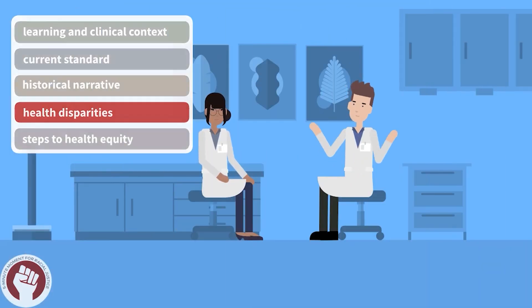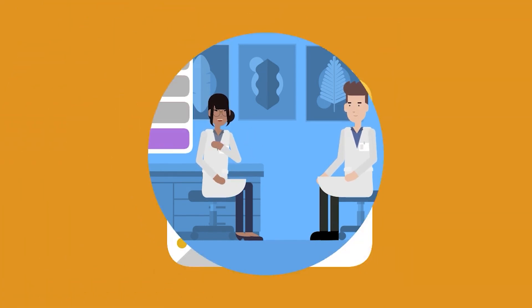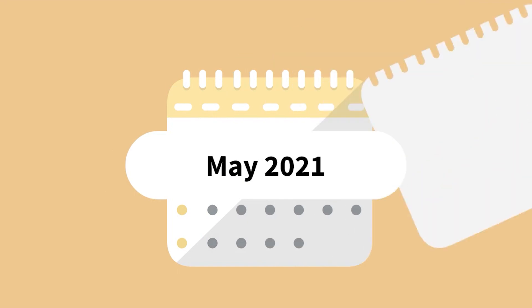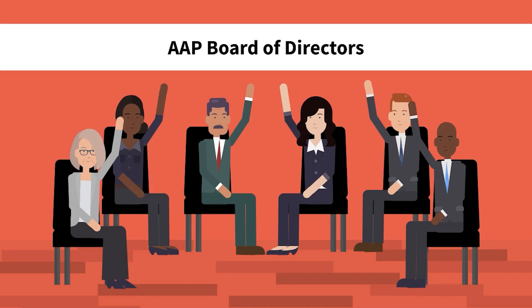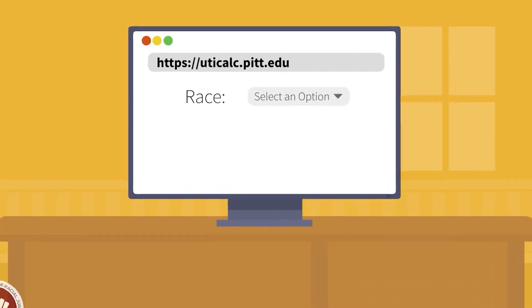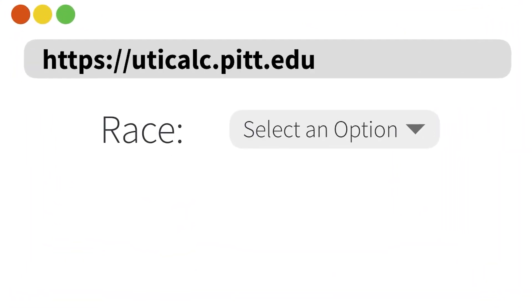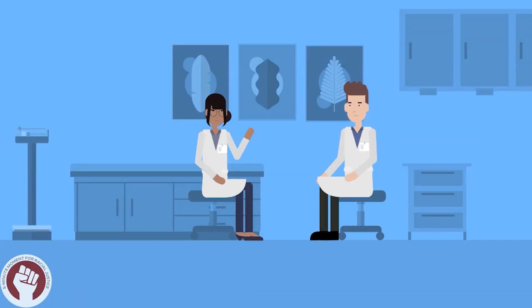Is there anything we can do to bridge this? In May 2021, the American Academy of Pediatrics Board of Directors voted unanimously to retire the UTI clinical practice guidelines due to improper use of race as a risk factor. Similarly, a separate study showed that removing race from an online UTI risk calculator and replacing it instead with duration of a child's fever and previous history of UTI had similar accuracy.